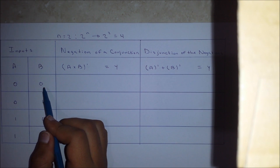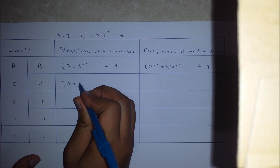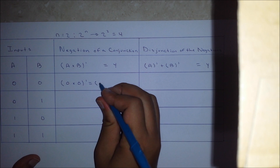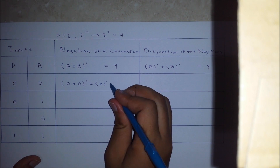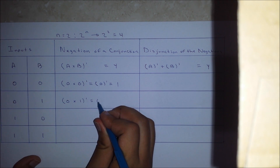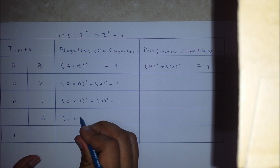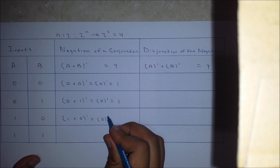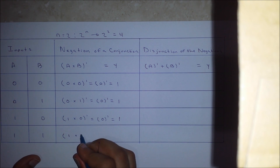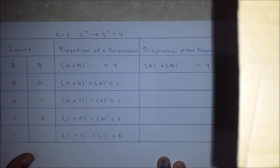We shall begin plugging in the possibilities in order to see what output is generated. 0 and 0 outputs 0 — the complement of 0 is 1. 0 and 1 outputs 0, and the complement of 0 is 1. 1 and 0 outputs 0 — the complement of 0 is 1. 1 and 1 outputs 1 — the complement of 1 results in 0.